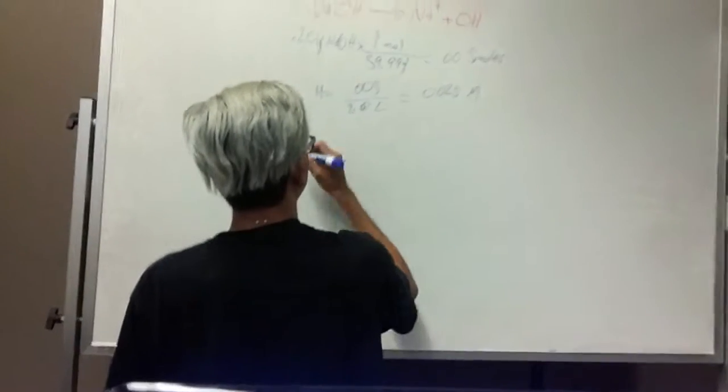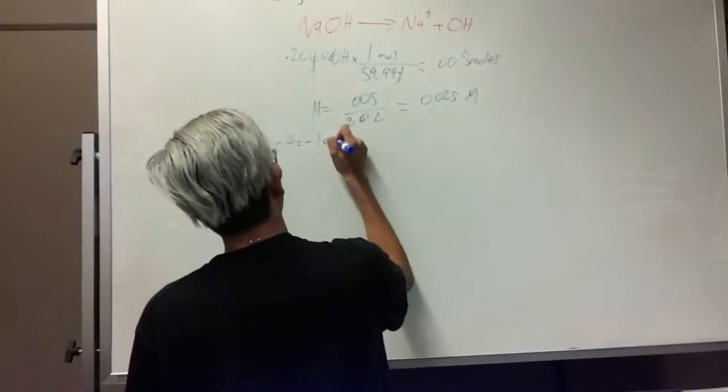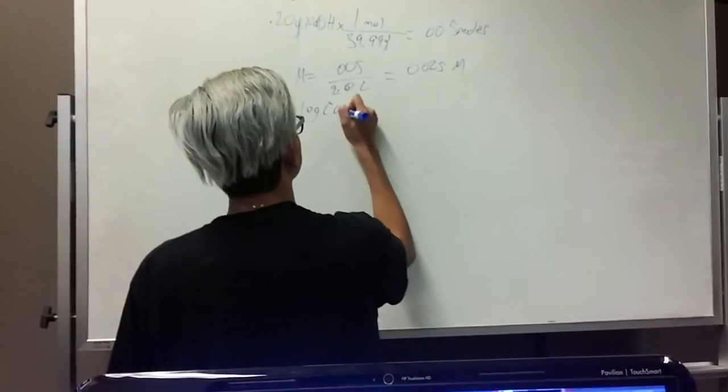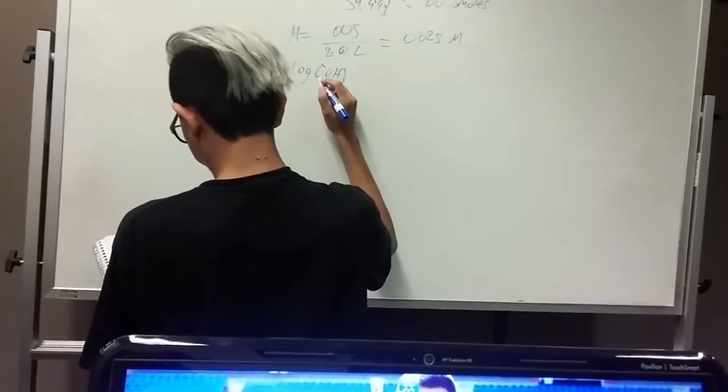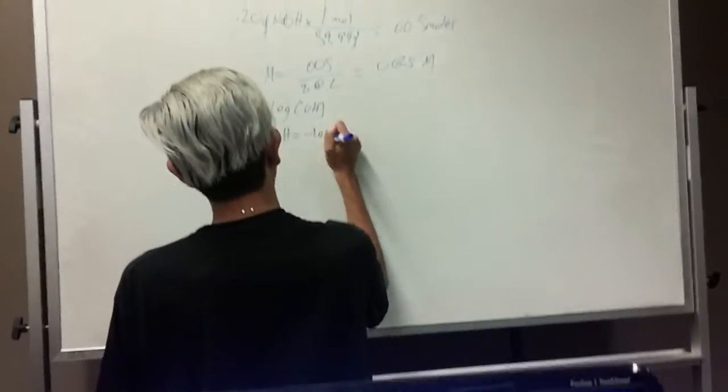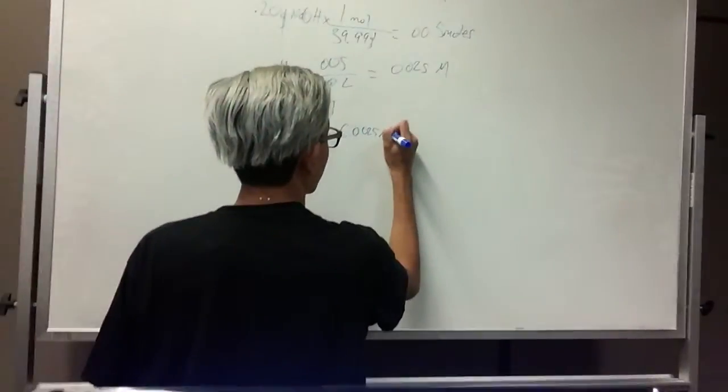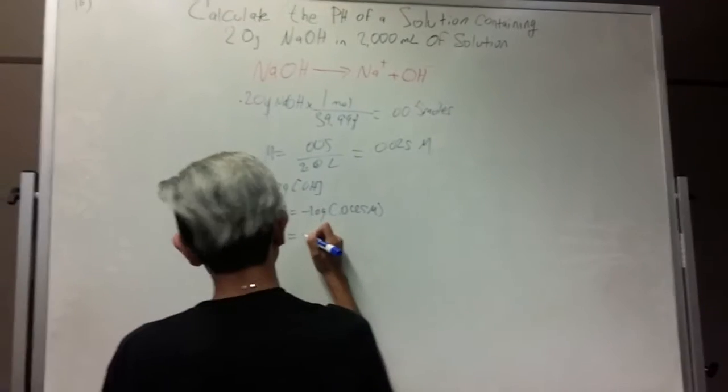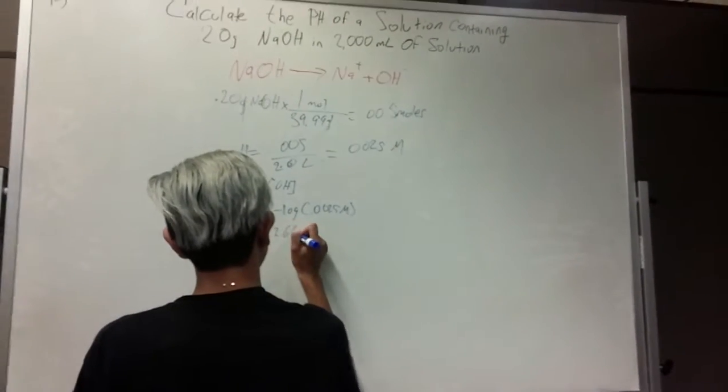Now you get pH, or pOH. When you place it, equals the negative log of your OH concentration, which is negative log of 0.0025, which gives you a pOH of 2.60.